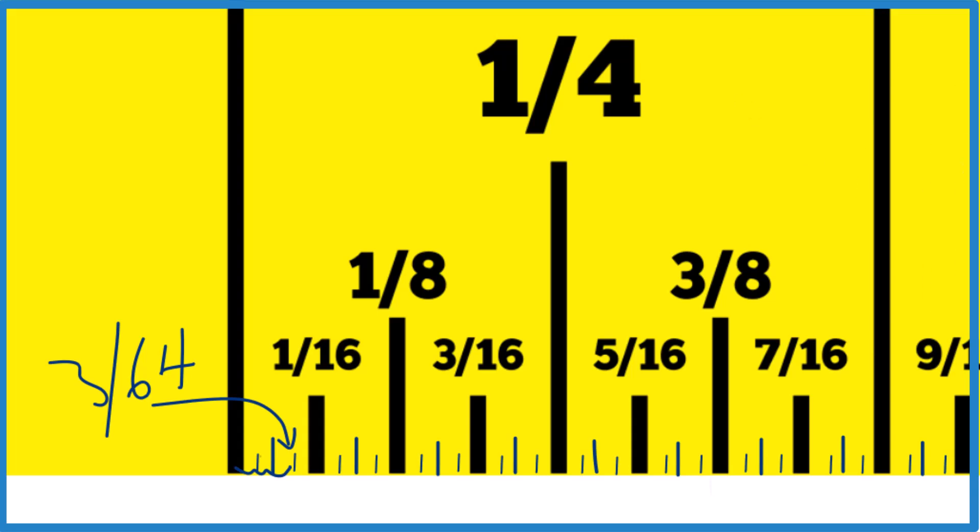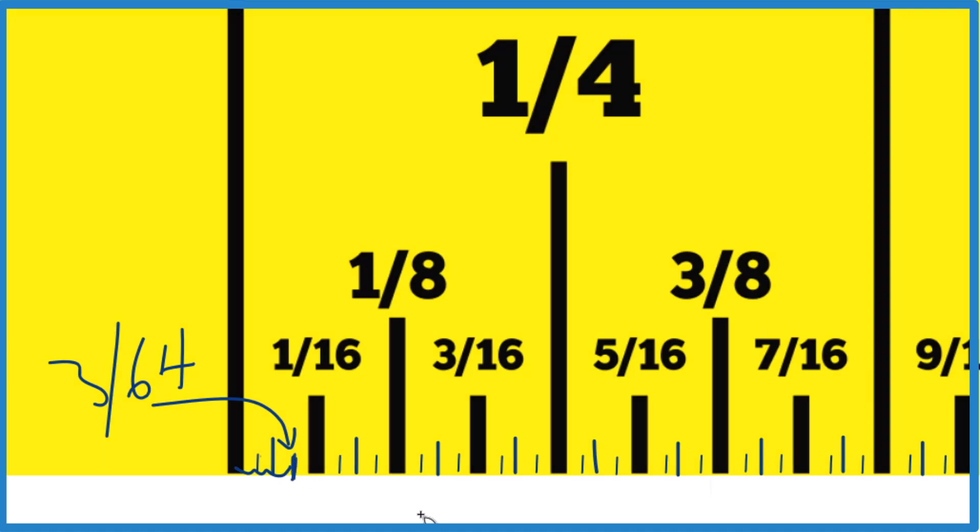But that's how you do it. That's how you find three sixty-fourths on a ruler or a tape measure. It's right there. This is Dr. B, and thanks for watching.